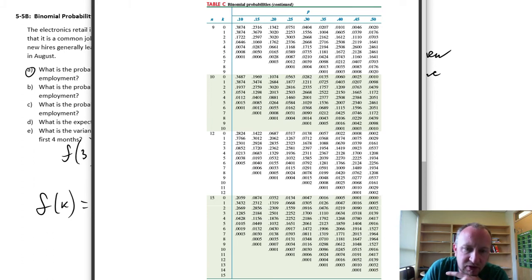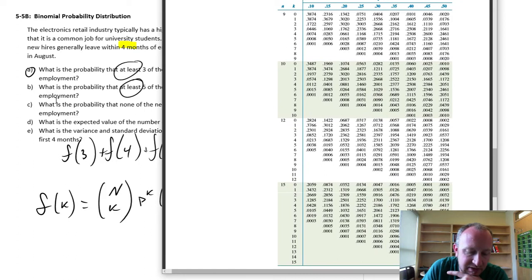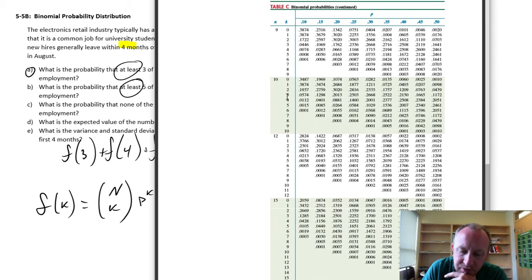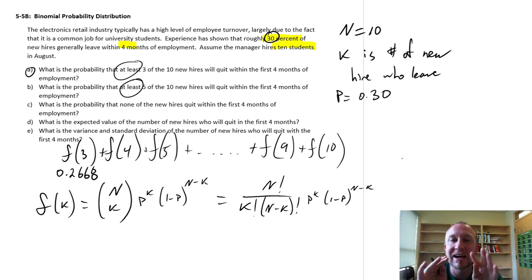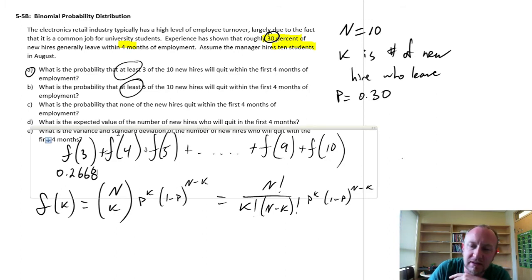So, for the very first probability, so this is F, the probability associated with 3 successes out of n trials, 10 trials. So, here's 10 trials, here's 3 successes, that probability of a success for each is, the probability of 3 successes out of 10 trials is .2668. So, here we have our first value, 0.2668, that would be the probability of exactly 3 out of those 10 new hires quit over the next 4 months.